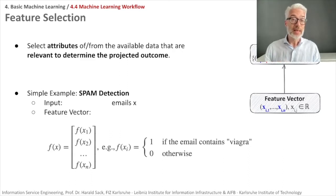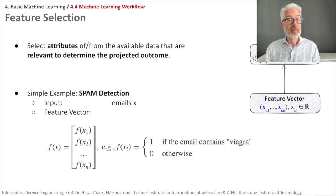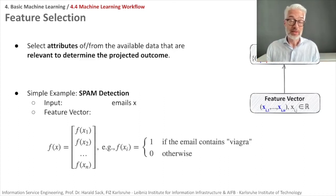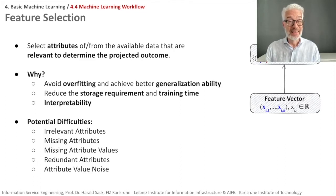For spam detection, we could define a feature that asks: does this email contain the word 'viagra'? This feature would be one if the email contains that word, and zero otherwise — and from this we create a feature vector for the emails. You can of course use even more features, but we must select what makes sense to distinguish whether something is likely to be spam, i.e., to determine the projected outcome. We select attributes from the available data to avoid overfitting and achieve better generalization.